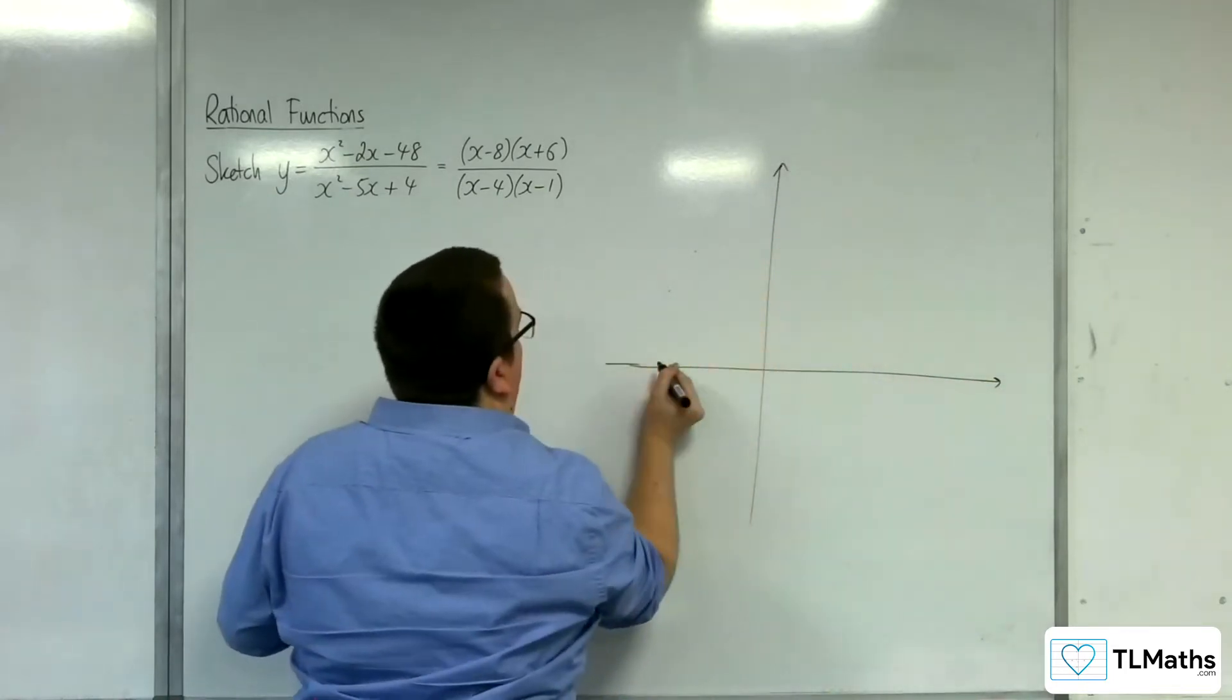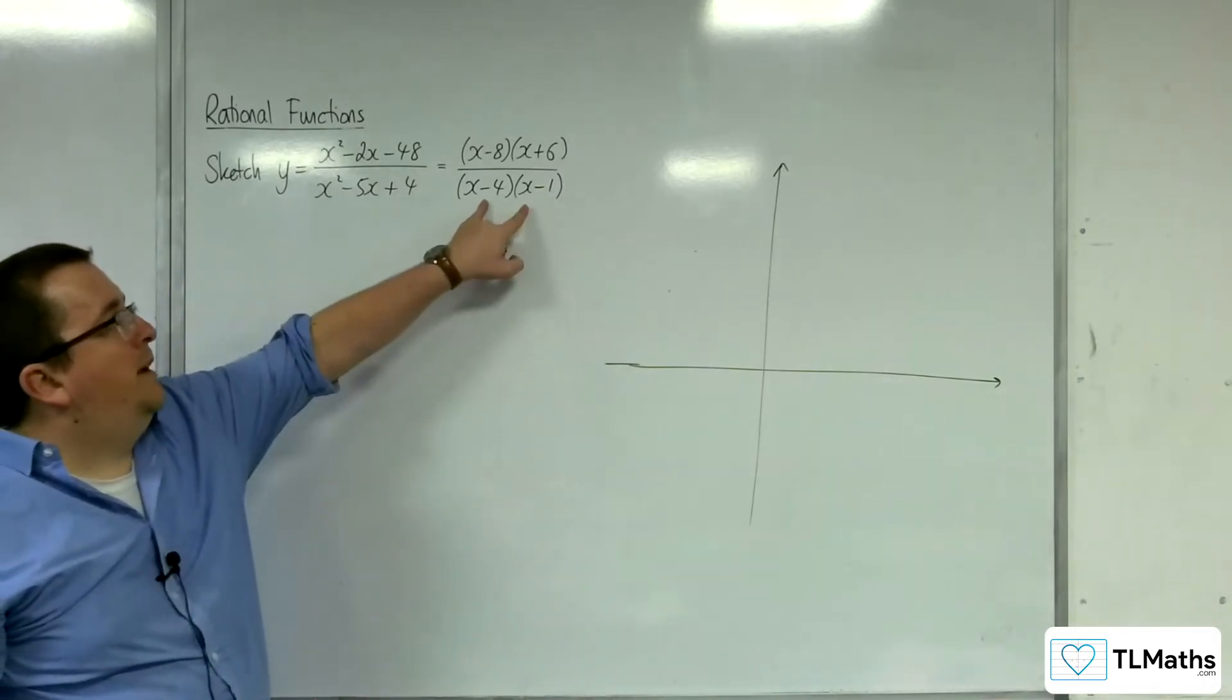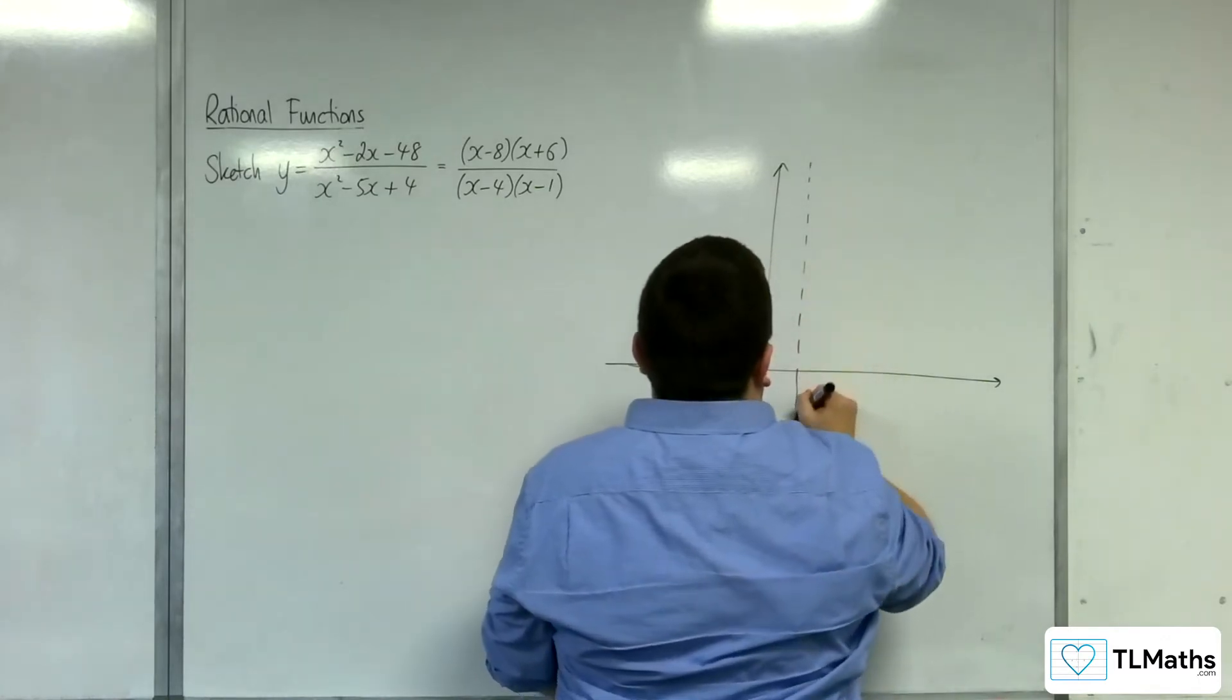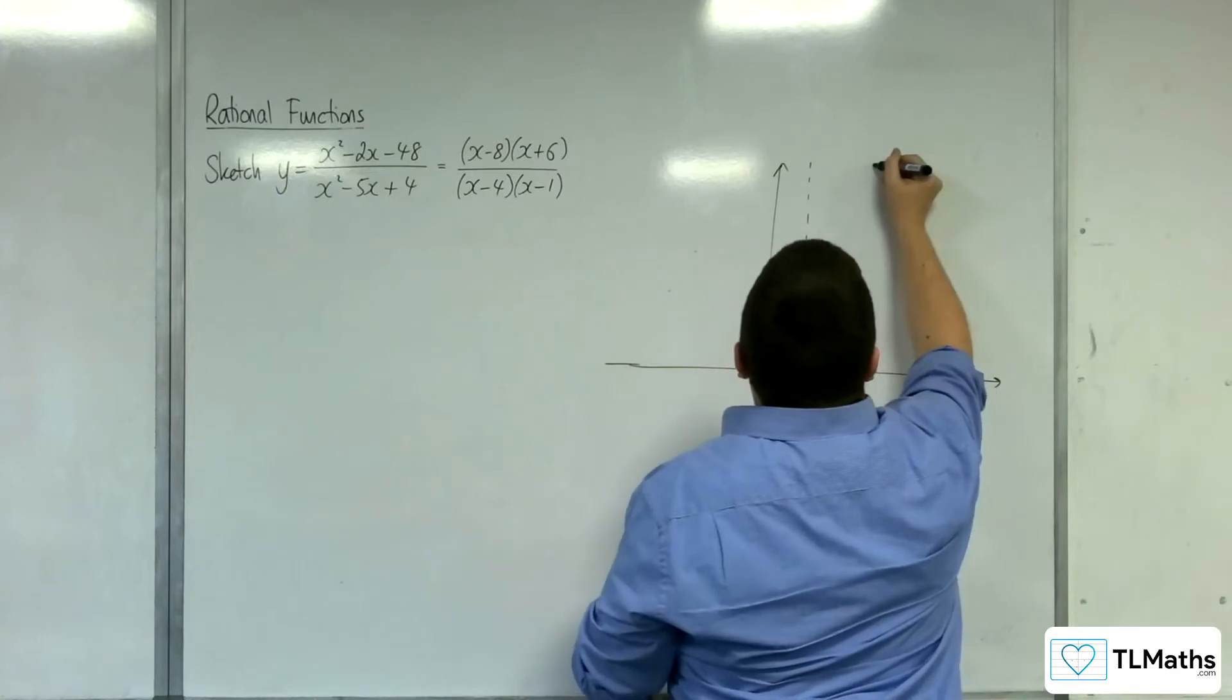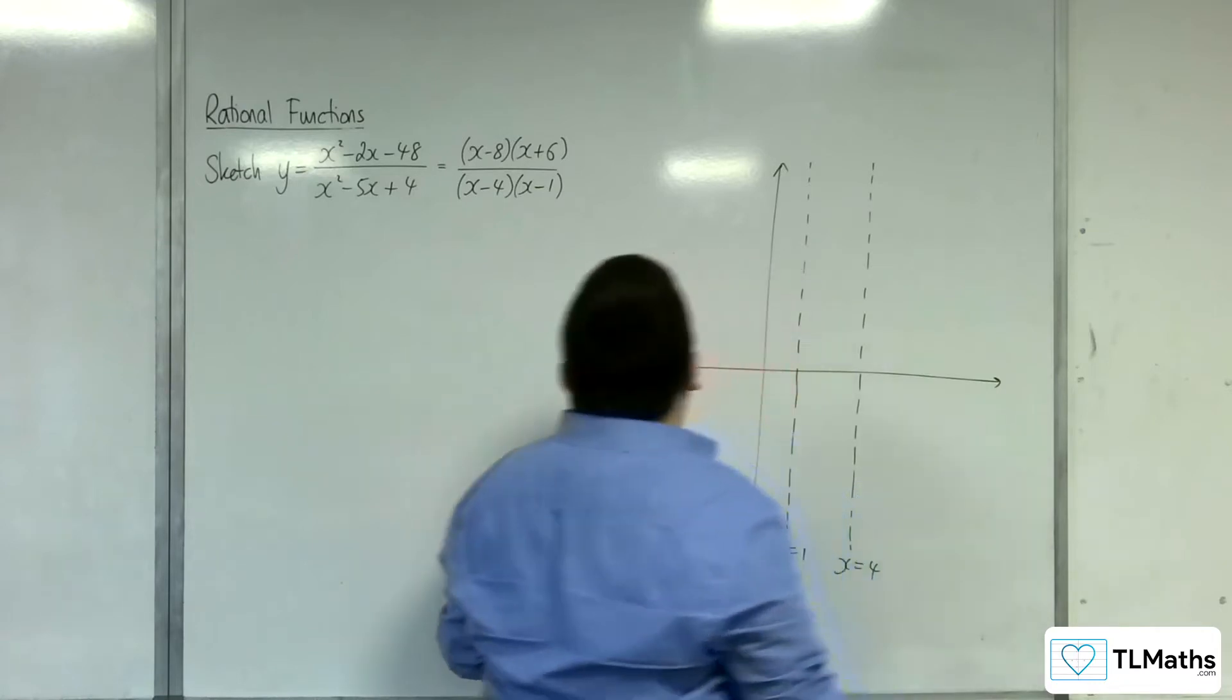First thing to spot, vertical asymptotes. That's when the denominator is 0, so we're going to have those at 1 and 4. So when x equals 1 and when x is equal to 4.